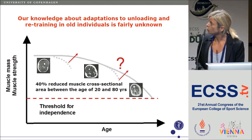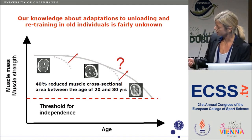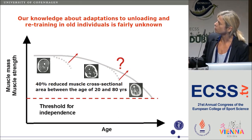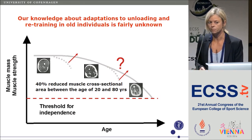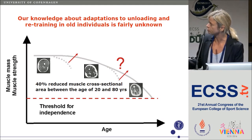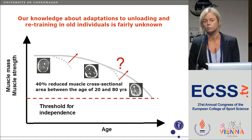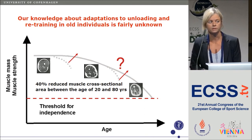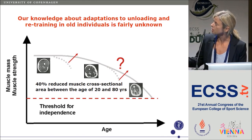We all know that with aging we lose muscle strength and muscle mass, and we also know a lot about what happens if you put young individuals to bed rest or post-unloading and subsequent retraining. But our knowledge about adaptations to unloading and retraining in older individuals is fairly unknown, despite the fact that older individuals are much more prone to periods of hospitalization, bed rest, and disease. So it's important that we gain more knowledge about what happens to older individuals in this situation.